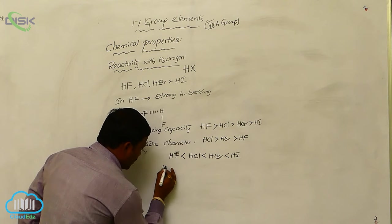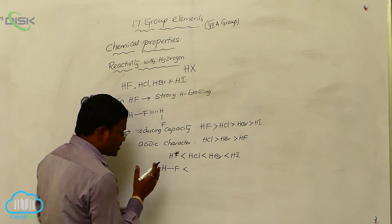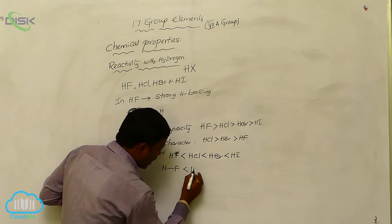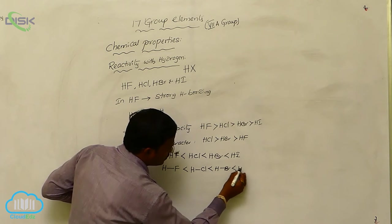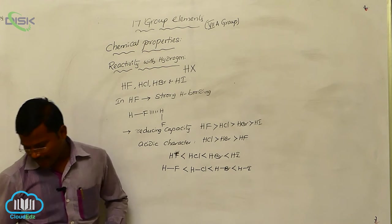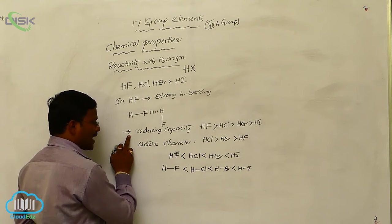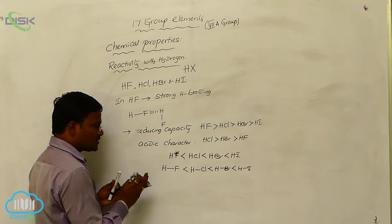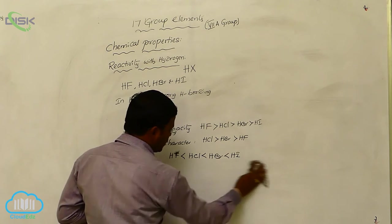The bond present in hydrogen fluoride — the amount of energy required to break the bond between hydrogen and fluorine — is less than hydrogen chloride, then hydrogen bromide, then hydrogen iodide. So this is about hydrogen halides: their reducing character, acidic character, and the amount of energy needed to dissociate the bond between the respective halogen and hydrogen atom in hydrogen halides.